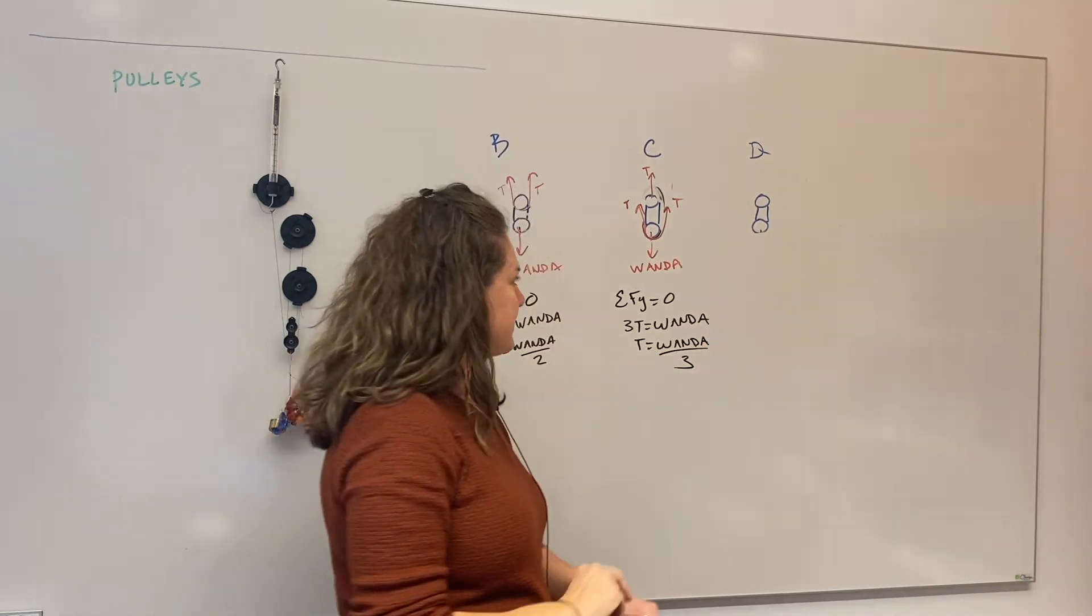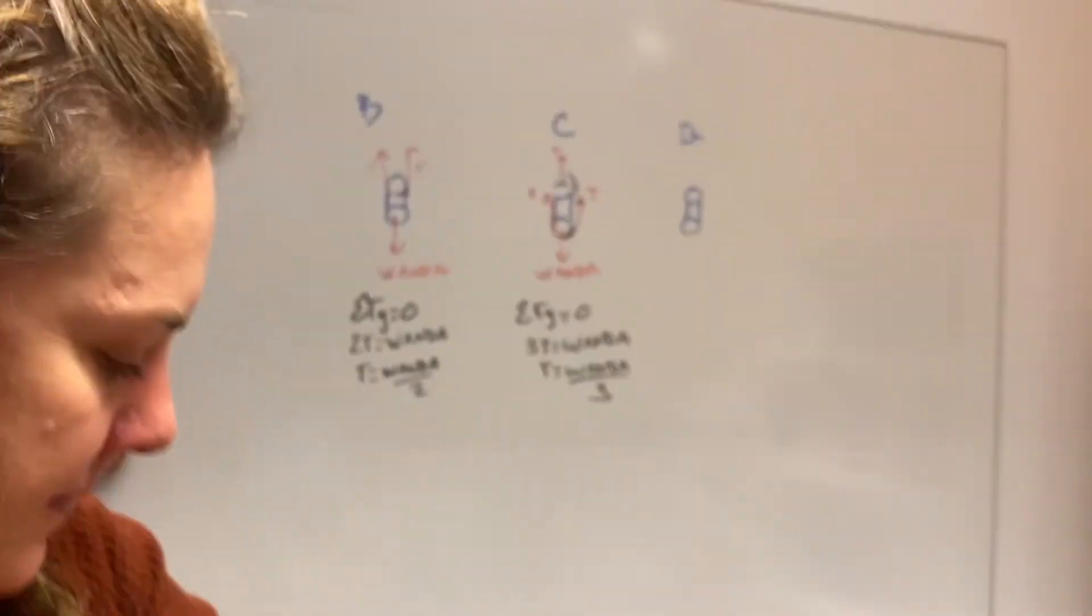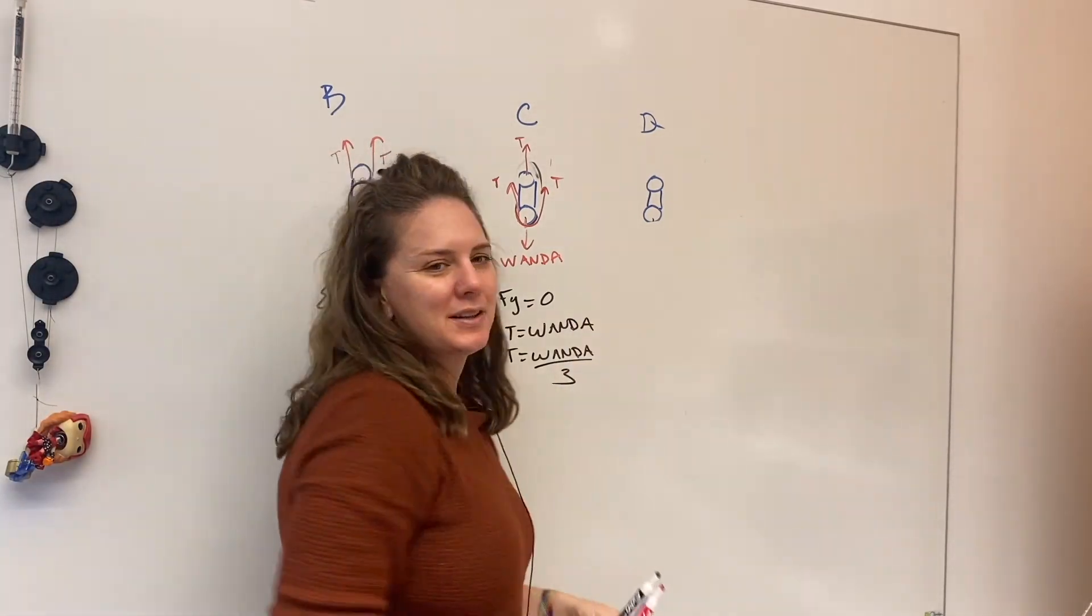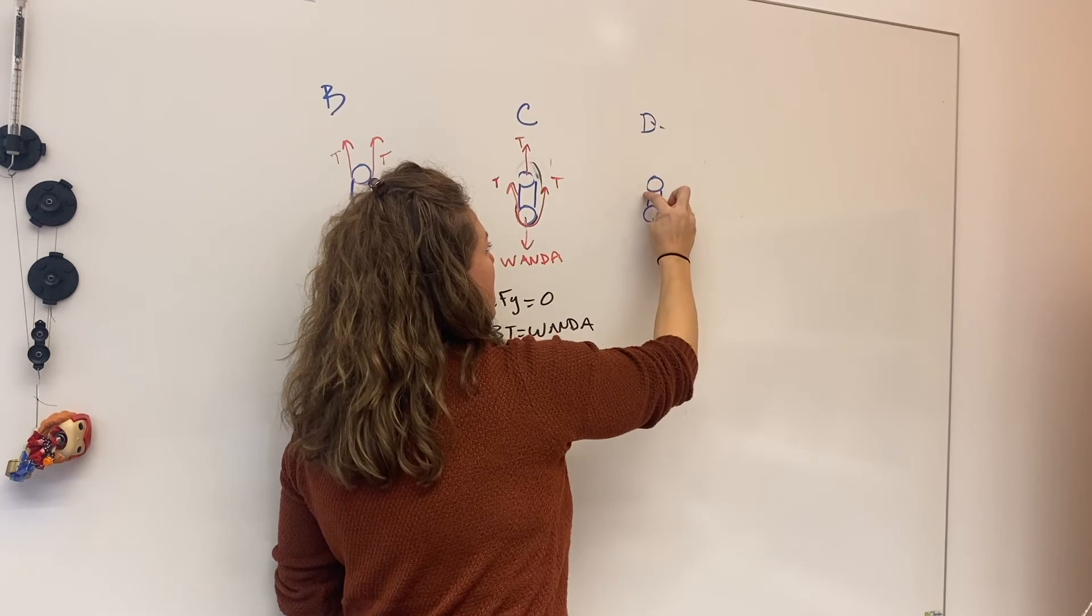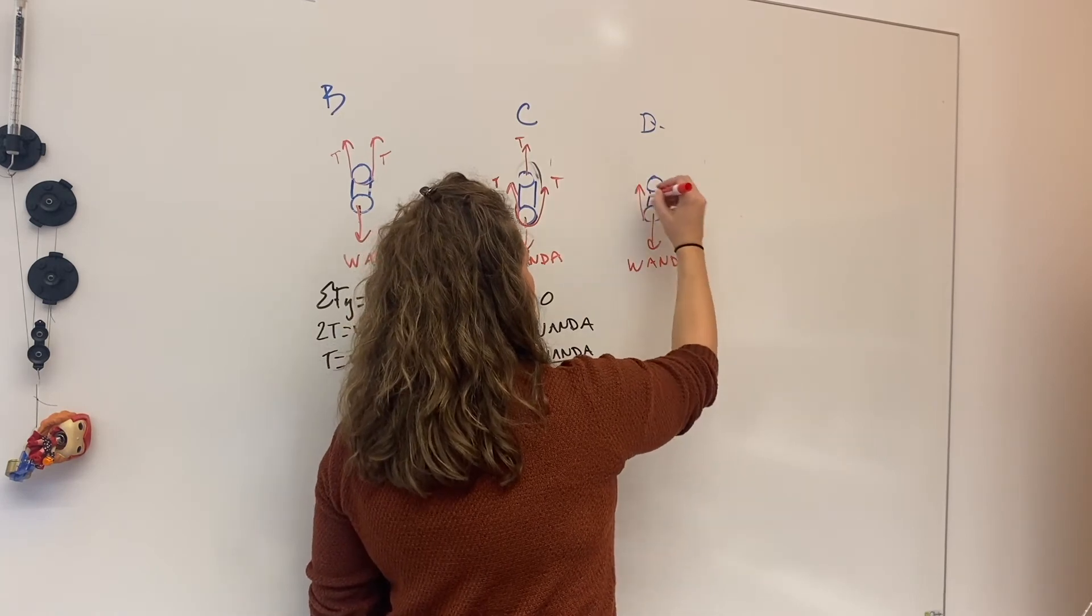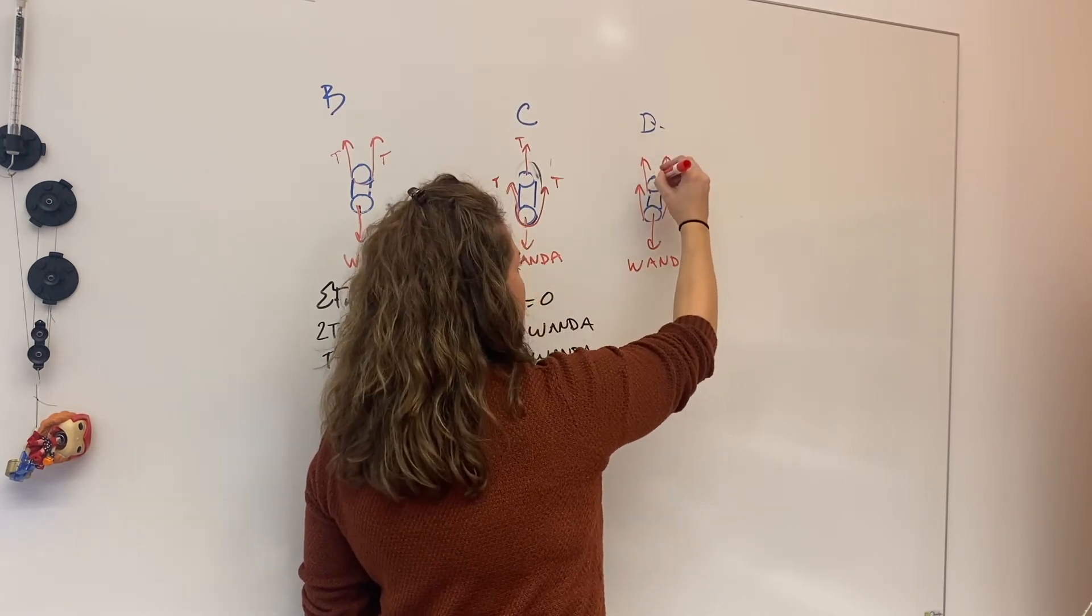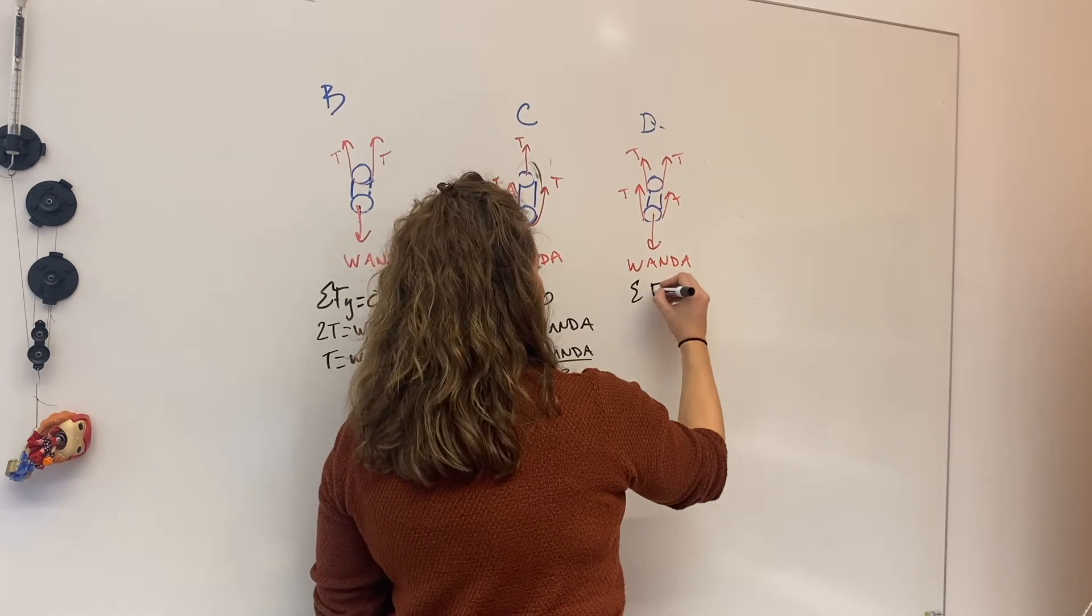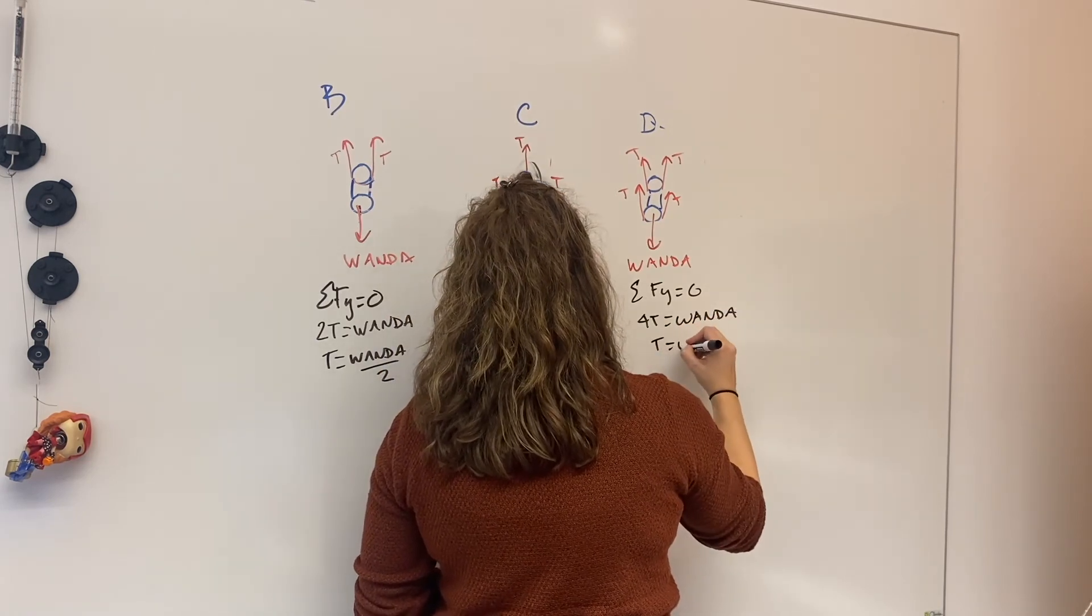And then our very last scenario, scenario D. Remember we came down from that spring scale, we went around the bottom one, we went around the top one, we came back, we went around the bottom one, and then we attached. So we had Wanda, and then we had tension, went above another one, came down here, so it's going to pull up still, and then it came back to that other one. So I have 4T. So in this case, the sum of the forces in Y is 0, 4T equals Wanda, so T equals Wanda over 4.